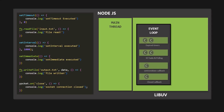Let's take a look at the four most important phases of the event loop. There are one or two other phases used internally by Node.js, but these are not that important. Each phase has its own callback queue with callback functions waiting for execution. In the first phase, the callback functions attached to timers are stored. When a timer expires, the callback function attached to that timer is stored in the callback queue of the first phase.